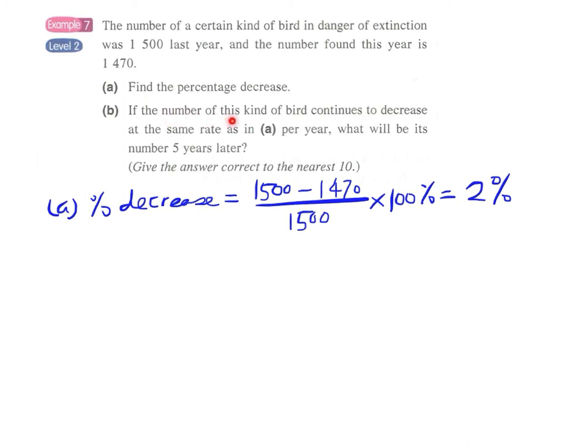Now in part b: If this kind of bird continues to decrease at the same rate, that is the number drops by 2% each year, what will be the number five years later?